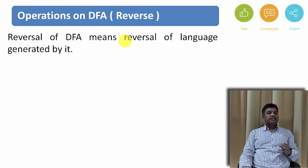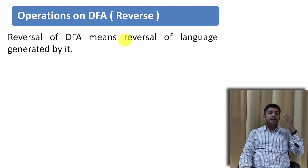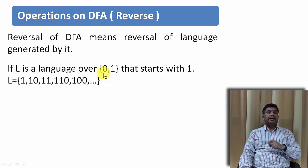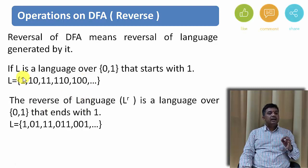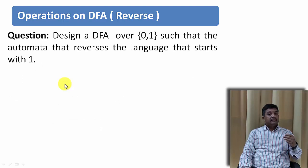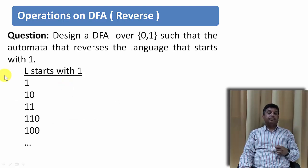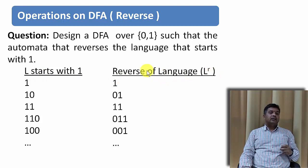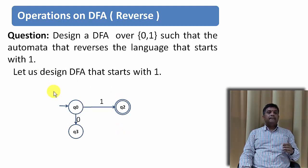One more operation we will discuss is reverse. Reverse means the reversal of the language, or the reversal of the strings generated by the language. If L is the language over 0 and 1 that starts with 1, the possible strings include 1, 10, 11, and so on. On reversal, 1 reversed is 1 itself, 10 reversed is 01, and 11 reversed is 11. So it is the reversal of each string, not the reversal of the DFA.